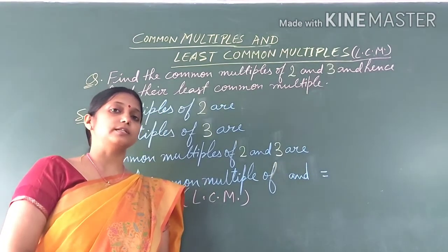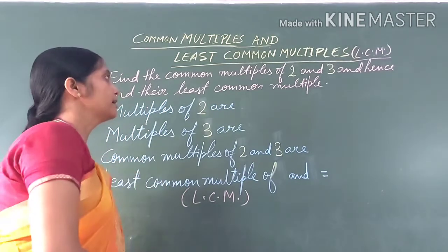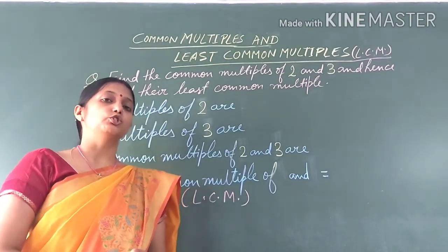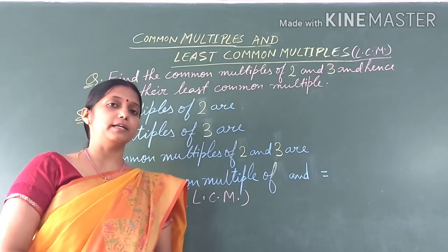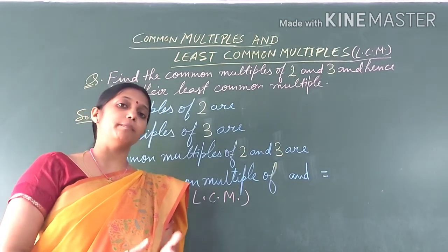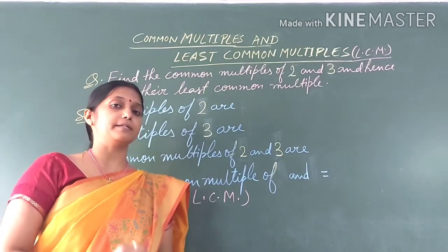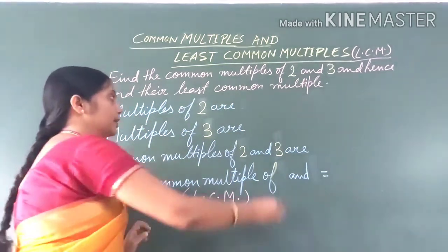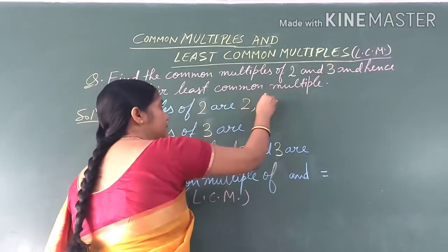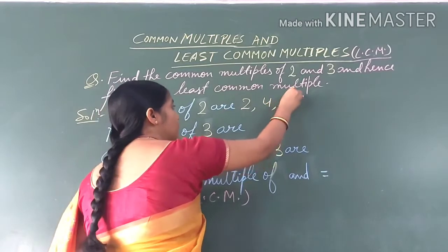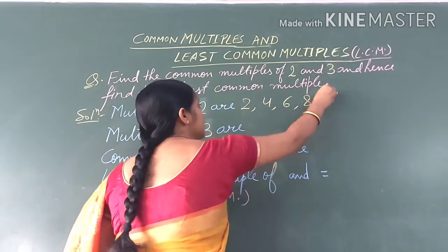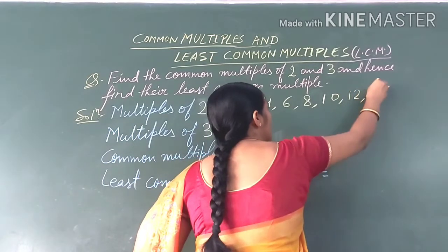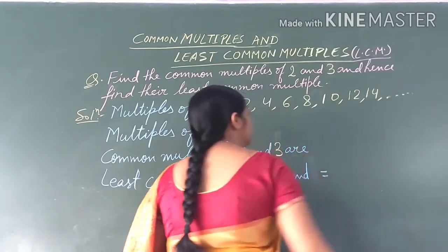The next question is: find the common multiples of 2 and 3, and hence find their least common multiple. So for 2 and 3, we have to find common multiples. First, we find the multiples of 2: 2, 4, 6, 8, 10, 12, 14, and so on.